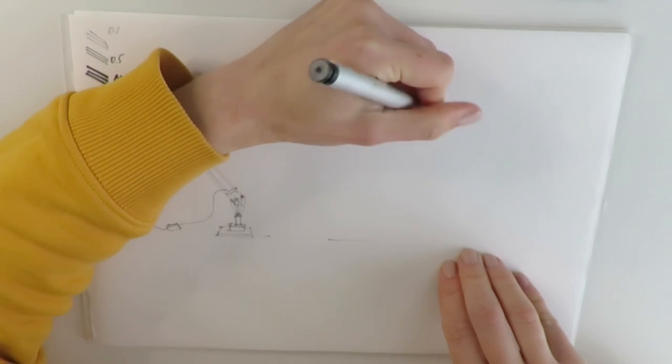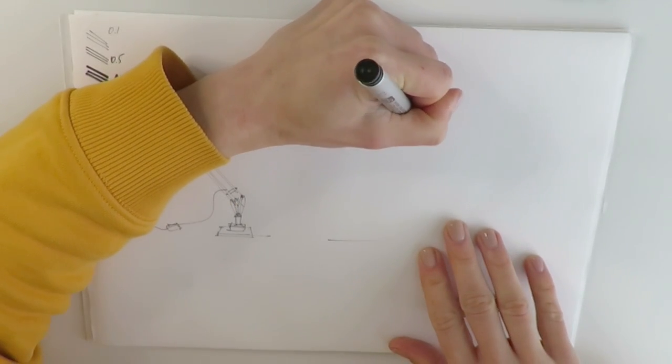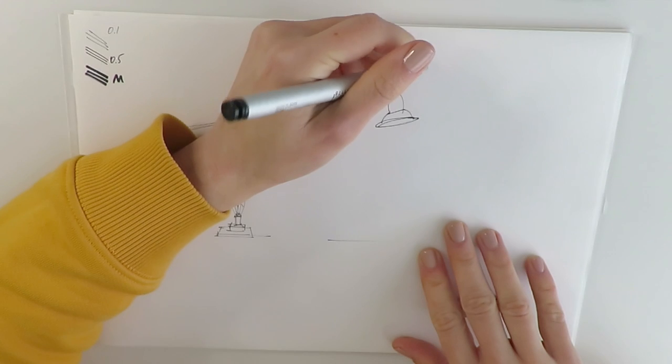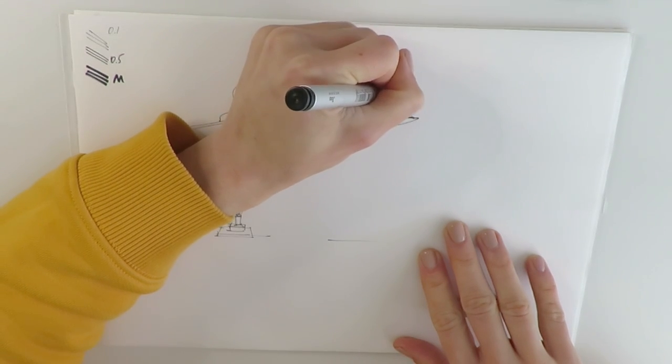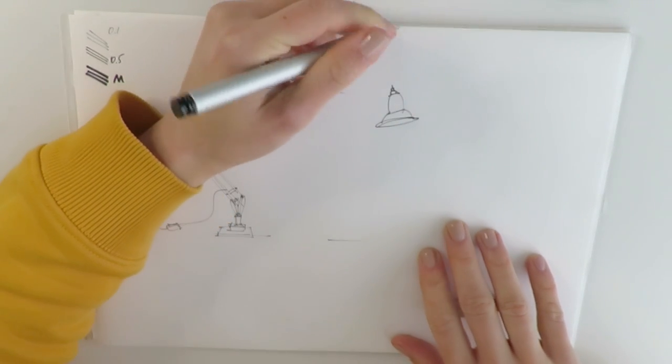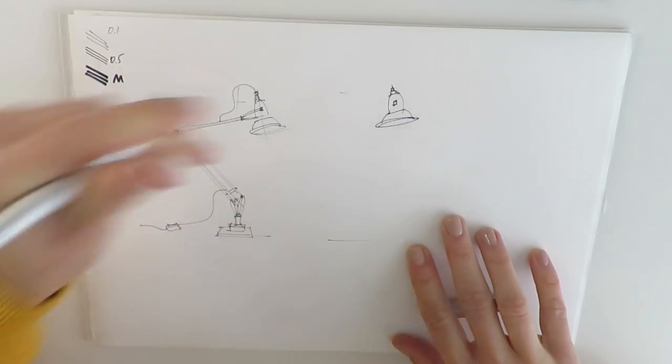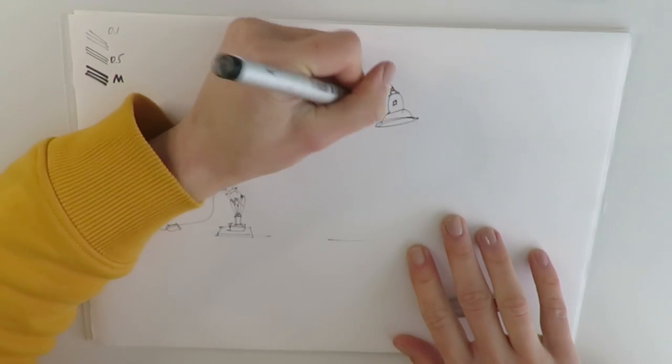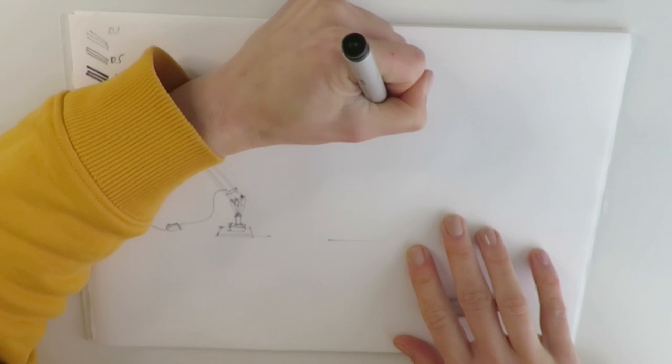We already got ourselves familiar with the basic proportions of the fixture so with this second drawing we can draw even faster. As you can see I take the height and the proportions from the first drawing.